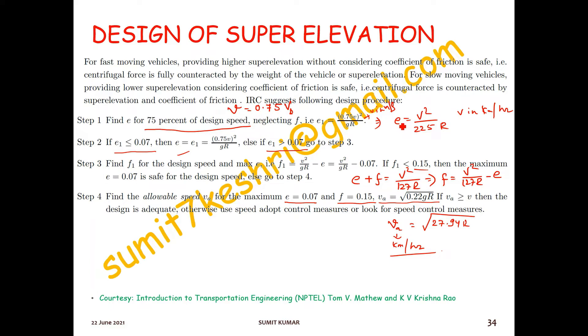Check if the value of e is less than 0.07, which means less than seven percent. If the value of e comes more than seven percent, then keep e as seven percent only.